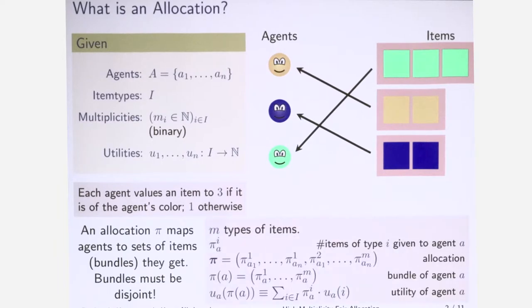A bit of notation, it's not super important, but what is important is this P(A), which is just a bundle of agent A. The last row is also important, where you have the utility of agent A that it gives to the bundle given to the same agent. We compute the utilities additively, so we're just computing the sum of particular items in the bundle.